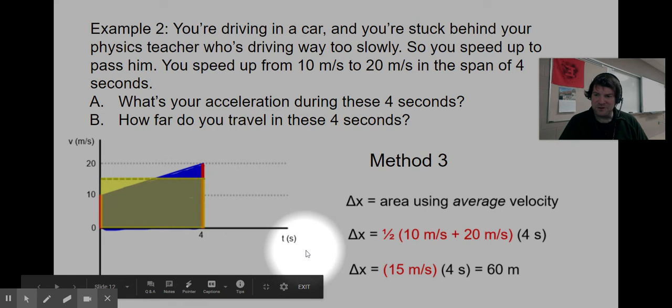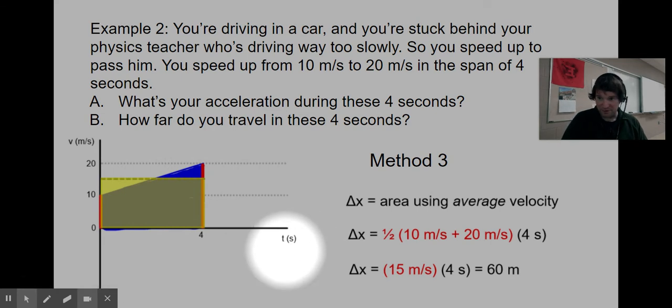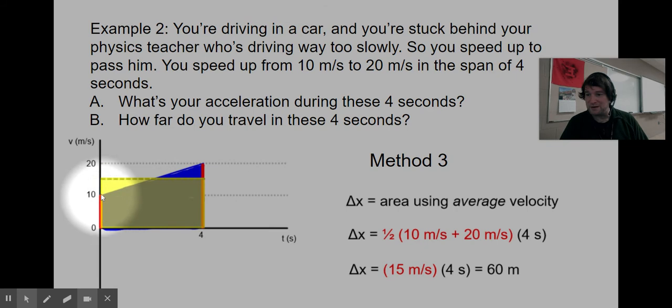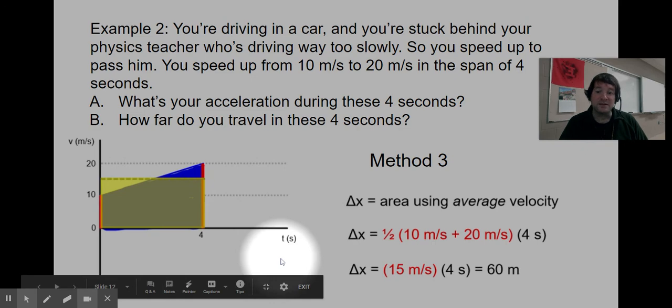Method three: the area of the trapezoid is just like multiplying the average height of the rectangle. The average height of the trapezoid is the height of this yellow rectangle. 15 meters per second times four seconds is 60 meters. If I just drew a rectangle that's 15 meters per second tall and four seconds wide, again I'm getting 60 meters.